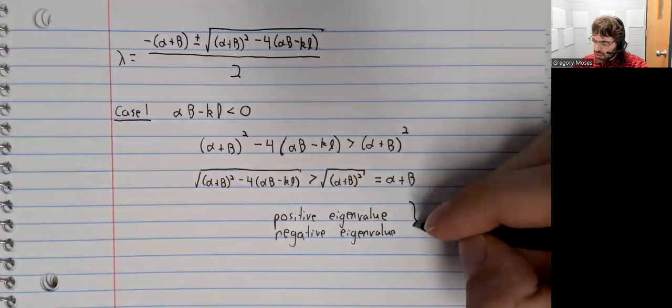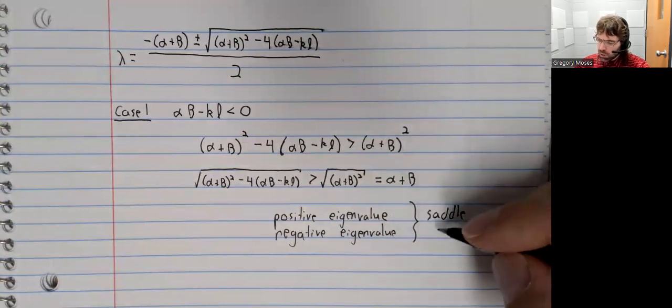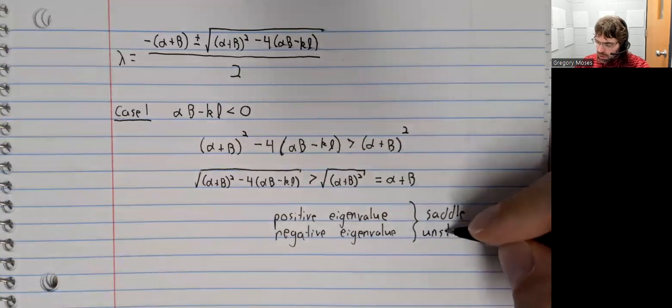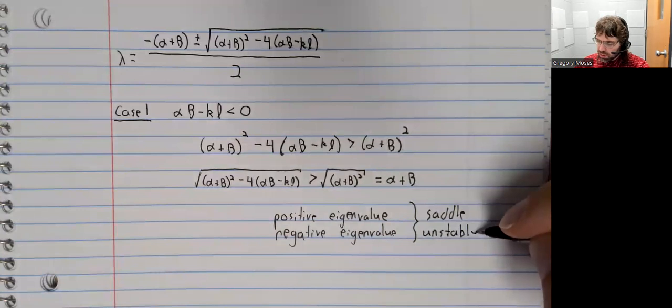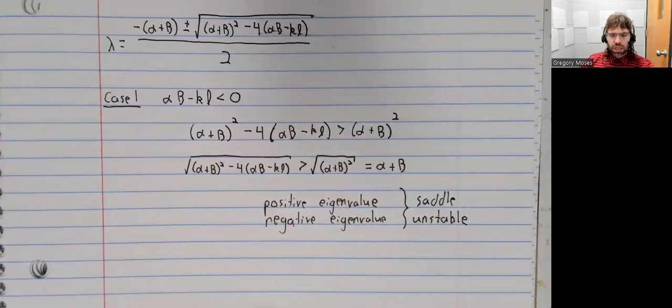And that tells us that the fixed point is a saddle and the fixed point is unstable. And in terms of the model, this is a bad thing. It means that these armies' military expenditures do not settle down to some fixed value. They just keep blowing up to infinity until presumably war will eventually arise.